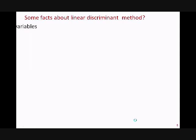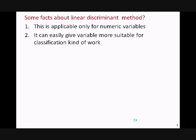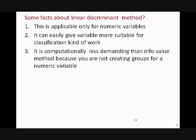It is applicable only for numeric variables — you can't use it for categorical variables. It can easily give you those variables which are more suitable for segmentation work. If your decision tree or CHAID doesn't work, you can use this technique to select variables to apply, and the tree will work. It is computationally less demanding, making it slightly faster than information value, because in the case of information value you first create groups for numeric variables, then calculate percentage good and percentage bad.